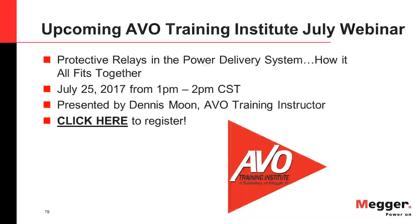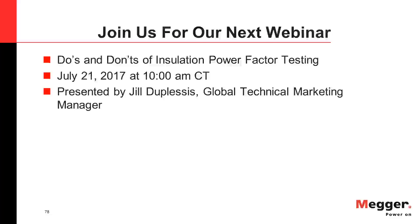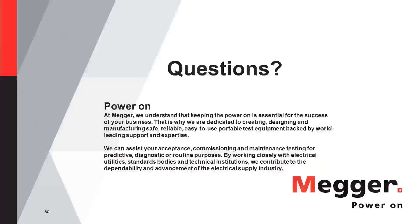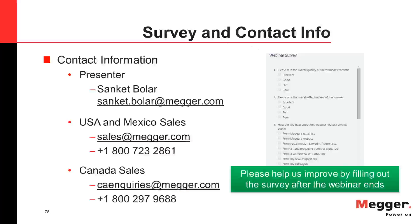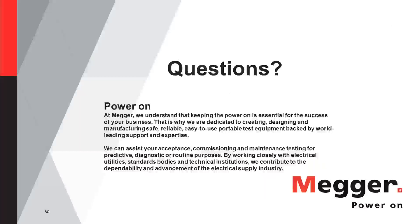We'll now take 30 minutes to answer as many questions as possible. If you have questions, please submit them now. When you close the webinar window, a survey will pop up — please take a couple of minutes to provide feedback so we can improve future webinars. A copy of the presentation and video recording will be emailed to everyone, and previous and upcoming webinar recordings are available at us.megger.com/webinars. First Q&A question for Andy: Is it possible to have current distortion without voltage distortion, or vice versa, or do both usually occur?